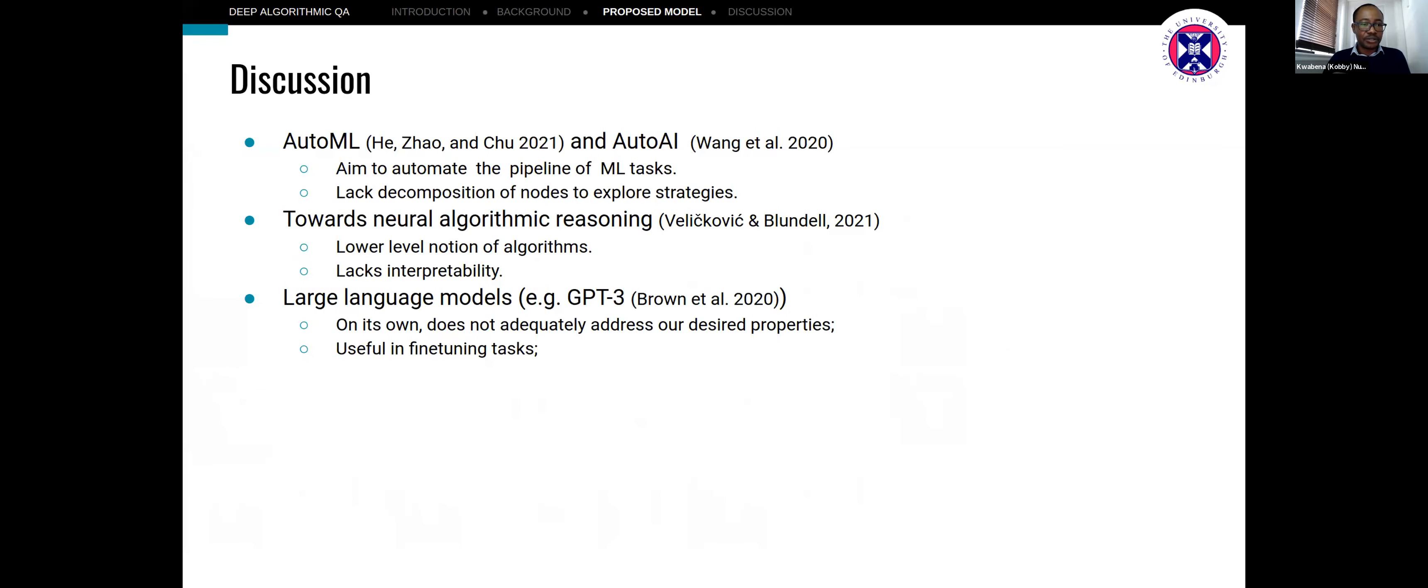There are other models that try to do this. AutoML and AutoAI try to automate the pipeline for ML tasks. However, they lack the ability to decompose the nodes to explore different strategies where there's the need to do so. Neural algorithmic reasoning, which is fairly new, also looks at this problem. However, being based on a purely neural approach means that it will lack interpretability.